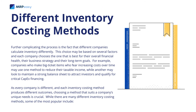Different companies calculate inventory differently. This choice may be based on several factors, and each company chooses the one that is best for their overall financial health, their business strategy, and their long-term goals. For example, companies who make big-ticket items and fear increasing costs over time may use one method to reduce their taxable income, while another may look to maintain a strong balance sheet to attract investors and qualify for critical capex financing. Choosing a method that suits a company's unique needs is crucial.